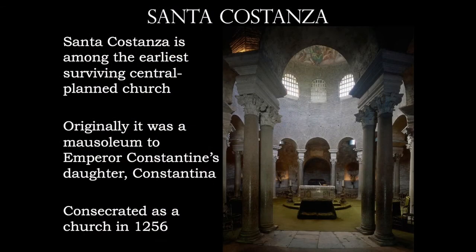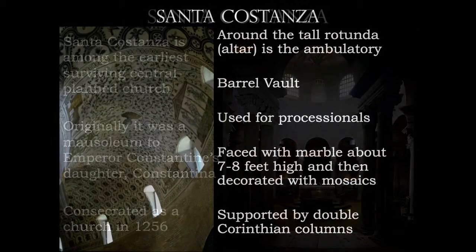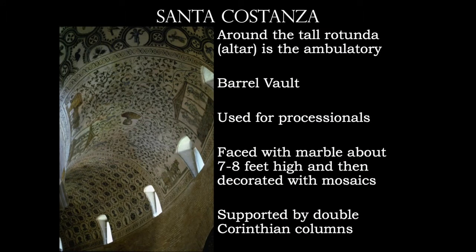Santa Costanza is the earliest surviving centrally planned church. Originally it was a mausoleum to Emperor Constantine's daughter, Constantina. Here's an even better view of the ambulatory — the walls are also faced with marble, and then you have the mosaics above them.